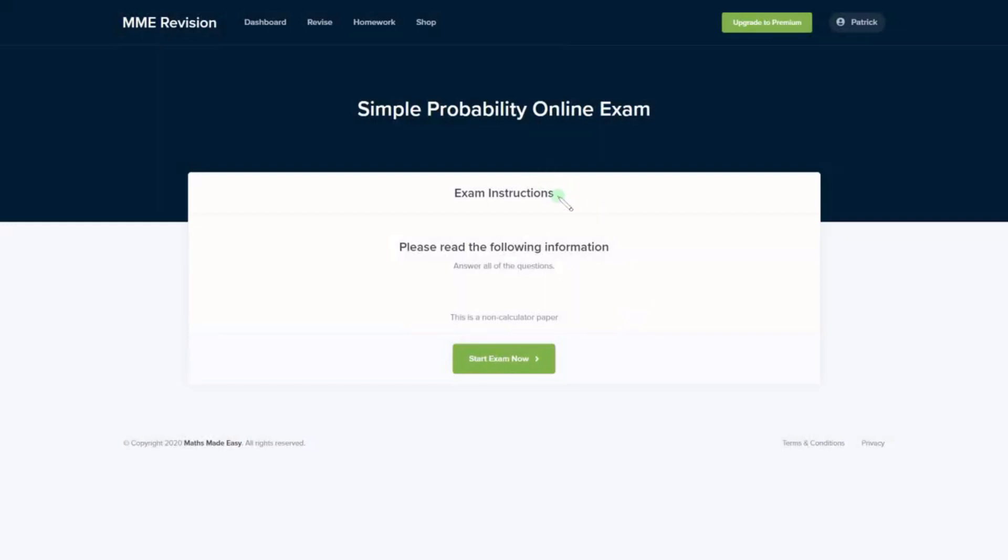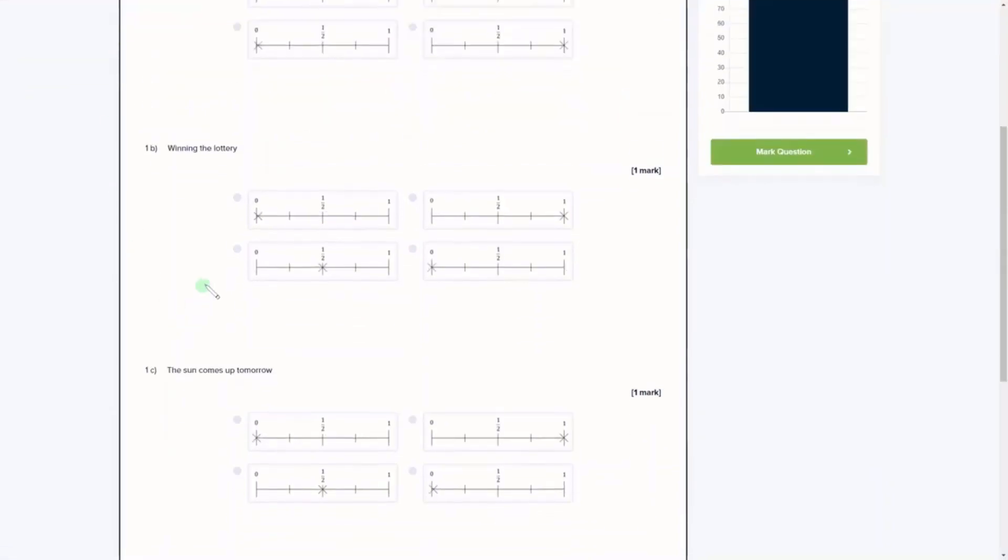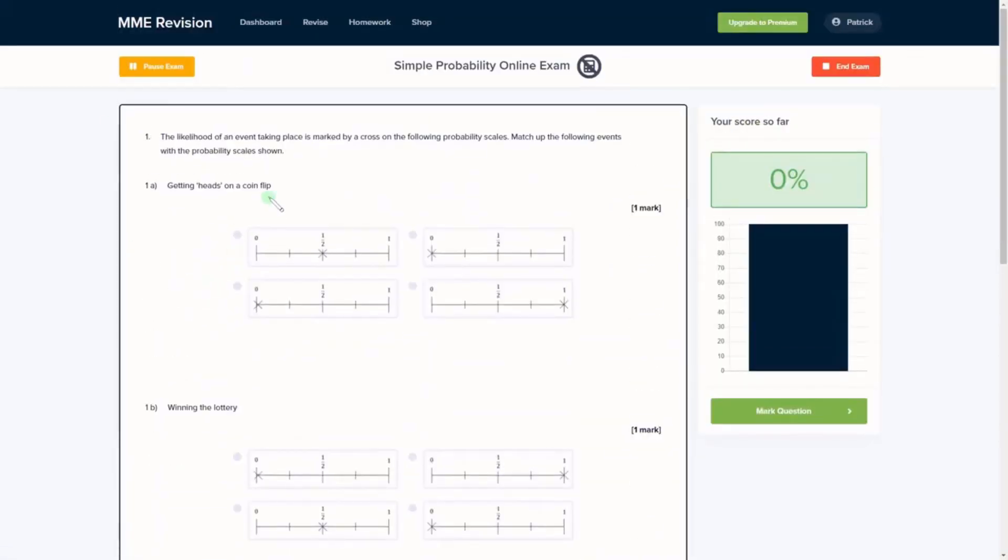If you feel ready to tackle some probability questions, why not have a go at our online exam? It's available through our revision platform. If you take the test, you'll find loads of different questions, a variety of different question types, and you get instant feedback on all of them. You can keep track of your progress and find out where you need to improve. If you're interested, click the link below.